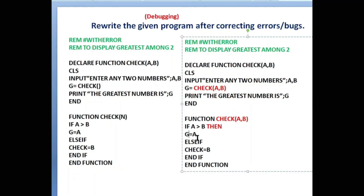If a is greater than b then we return a — that is the greatest number. To return we should write the function name: check equals to a, not z equals to a. This is another error. Then next is else — we don't need else if, we need only else, because we are not checking another condition. If a is greater than b then we return a, else we return b: check equals to b. End if, end function — correct. This is done.